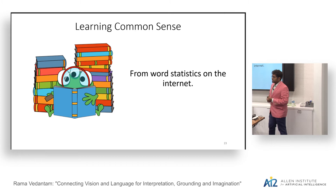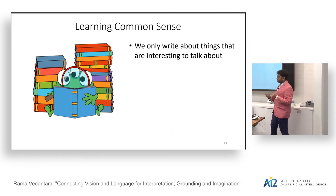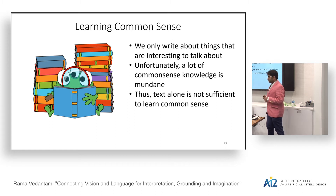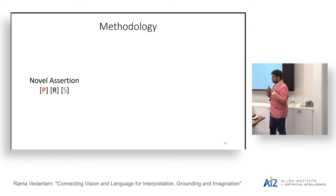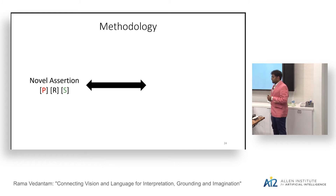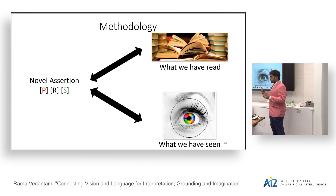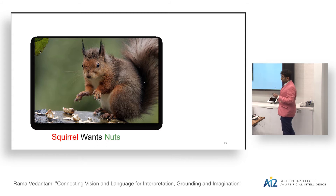Text alone might not be sufficient to learn common sense, so our hypothesis is to use vision to learn common sense. Our methodology: given a novel assertion P-R-S, compute its similarity to concepts we already know to be plausible. Something highly similar to plausible things is likely plausible. In addition to things we have read, we argue we should also reason about things we have seen. For fairly abstract relations like 'wants,' an image of a squirrel wanting nuts has rich semantic features — gaze, expression, pose — all indicative of wanting.